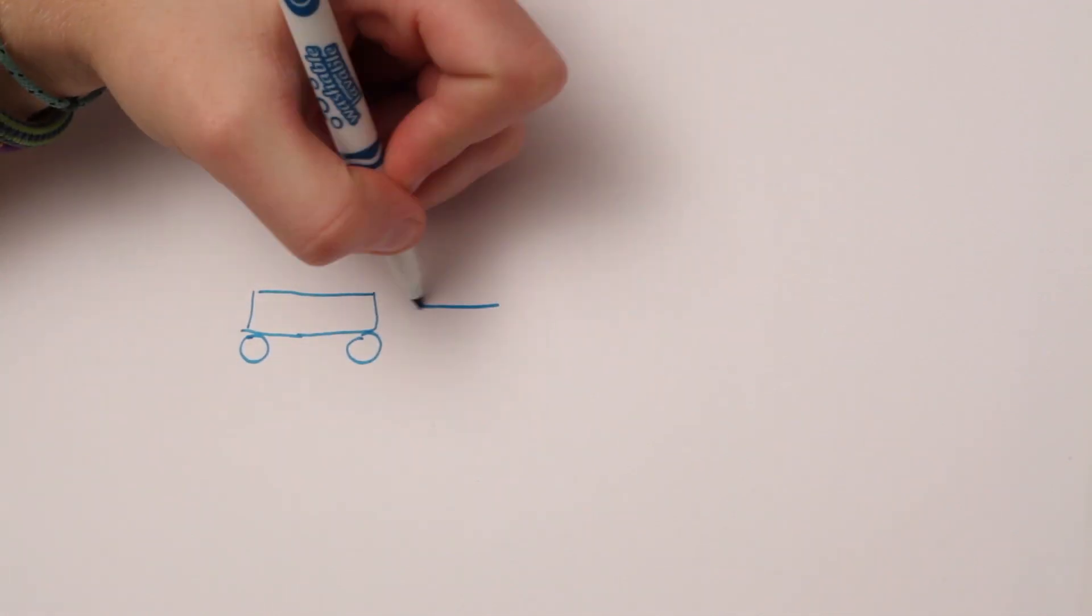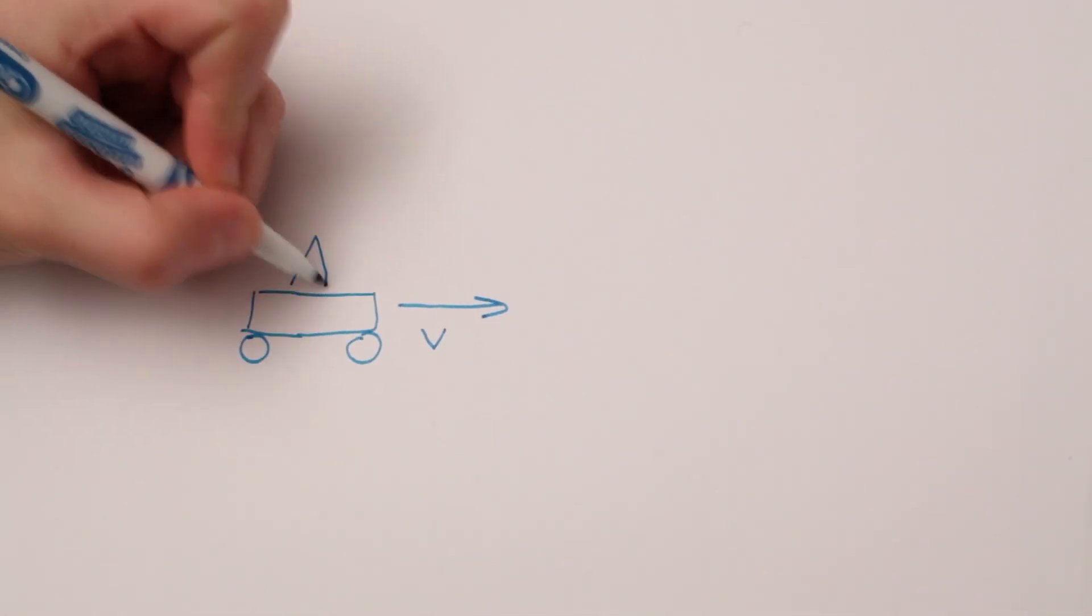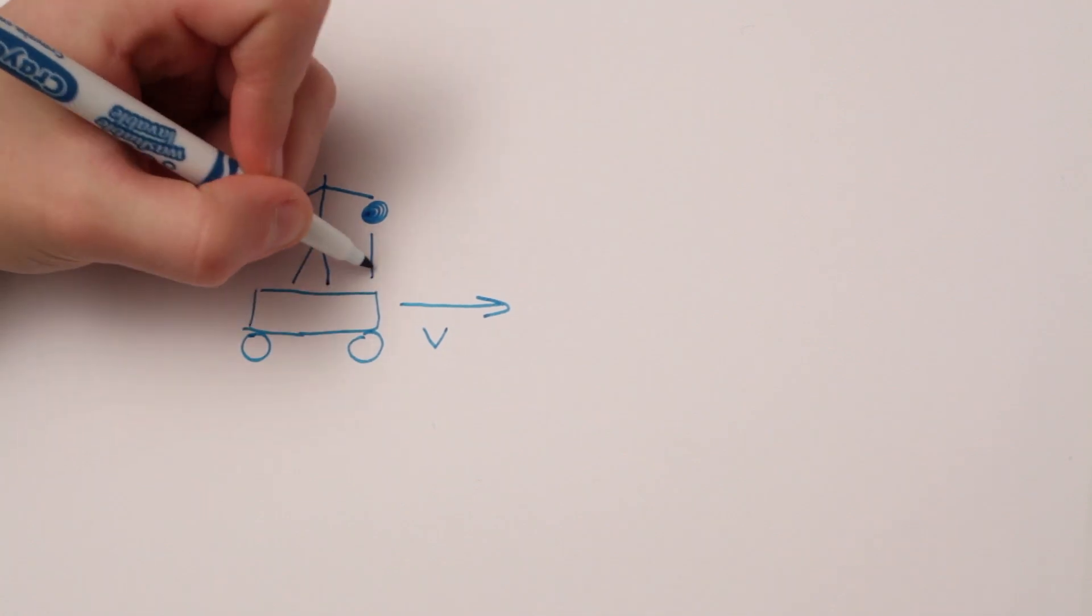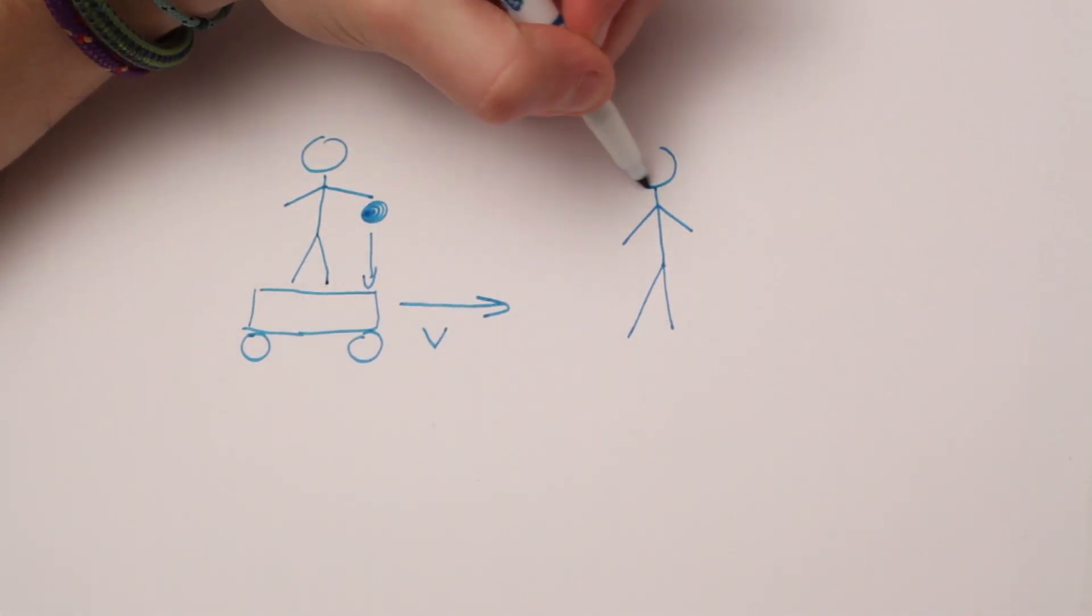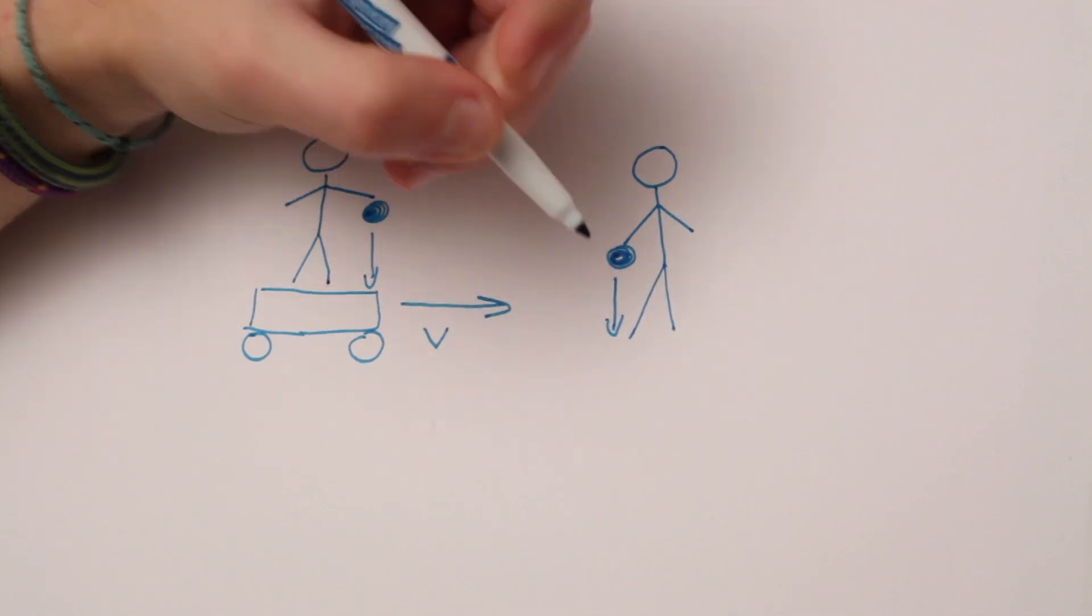These two points of view can be called frames of reference, and even more specifically, inertial frames of reference. An inertial frame of reference is a frame of reference that is moving at a constant velocity, or one that is not moving at all. This is because one at a constant velocity and one that is not moving at all feel the same.